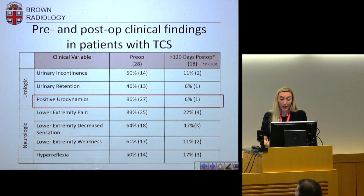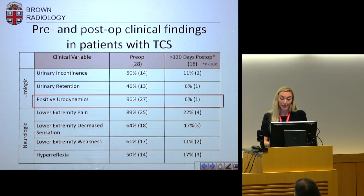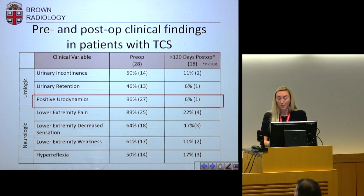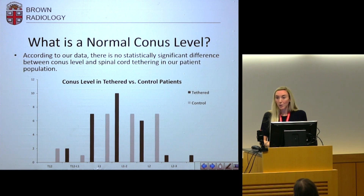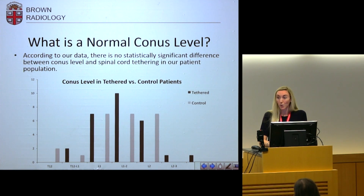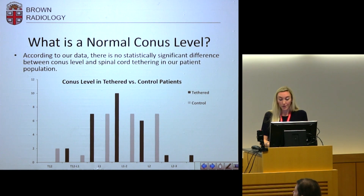To reiterate, a positive urodynamic study as an indicator for surgery seemed to be very significant, as well as urinary incontinence, retention, lower extremity pain, decreased sensation, weakness, and hyperreflexia. We also looked at conus level — we were interested in whether there was something we were missing with the conus level and what is normal. We found no statistically significant difference between our tethered cord population and control patients.